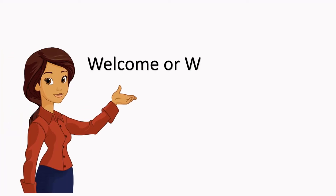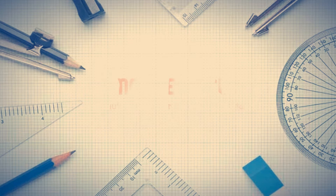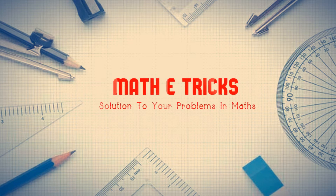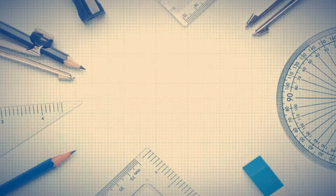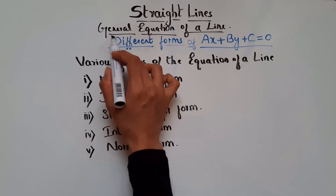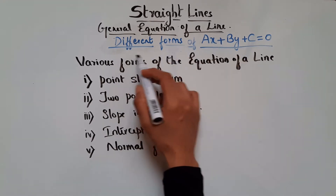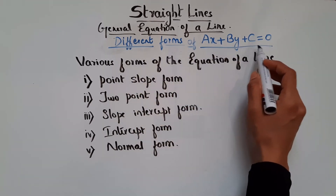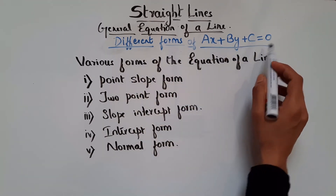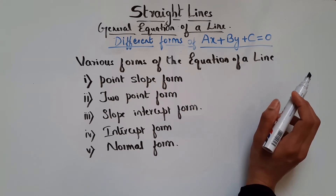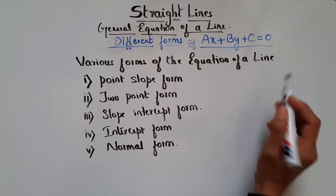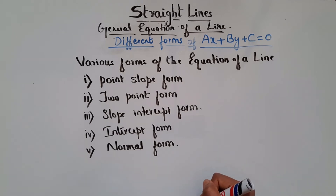Hi guys, welcome or welcome back to my channel. In this video, we will see the general equation of a line and also different forms of AX plus BY plus C equal to 0. In my previous video, we have seen problems based on various forms of the equation of a line. If you haven't watched that, there is a link in the description box below — you can check that out.